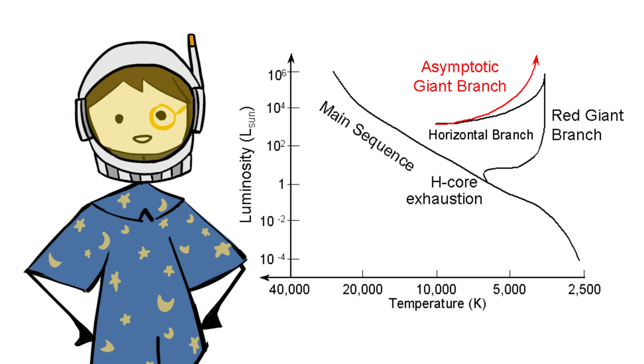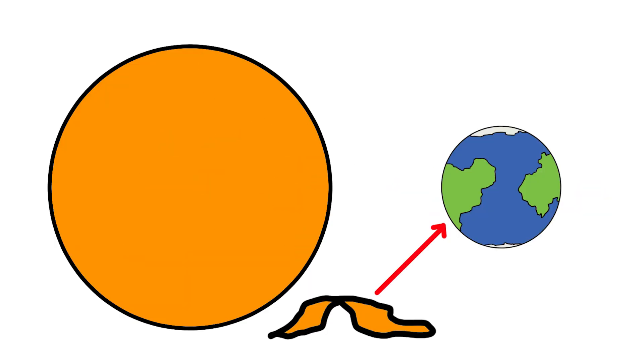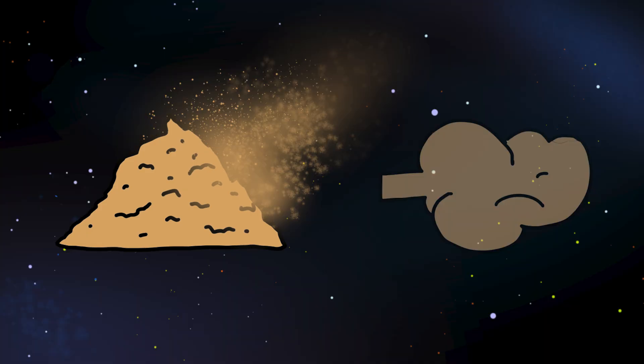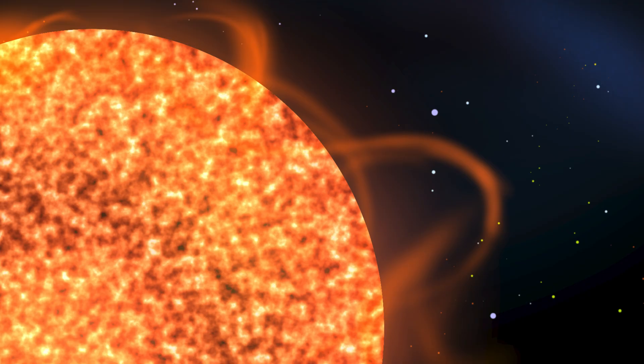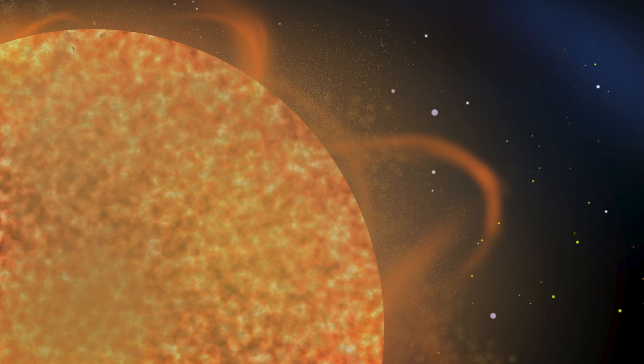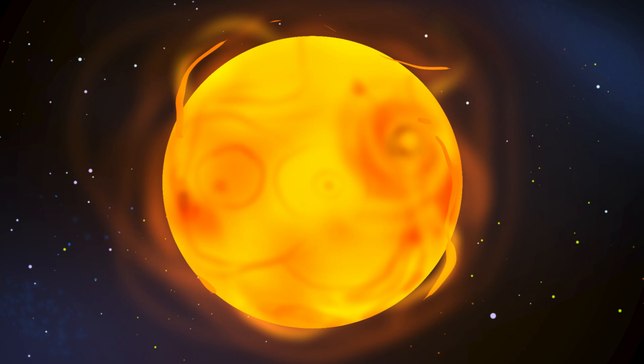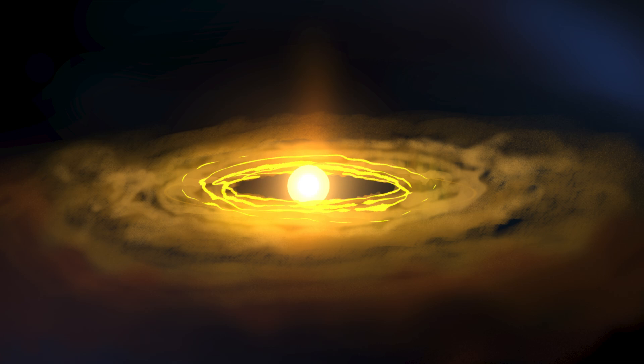The AGB phase is characterized by massive mass loss. The Sun sheds material at a rate of one Earth mass every 30,000 years. Solar winds blow at speeds of 20 to 30 kilometers per second, carrying dust and gas into interstellar space. The dust forms a thick cocoon around the star, making it appear dim and heavily obscured. Finally, in the mid-7th billion year, the thermal pulses become so violent that the Sun can no longer hold its outer layers. The entire stellar atmosphere is ejected into space.